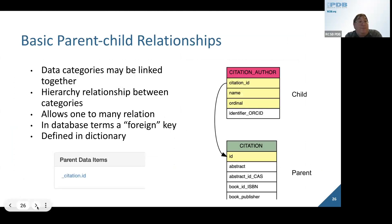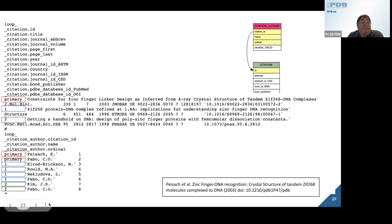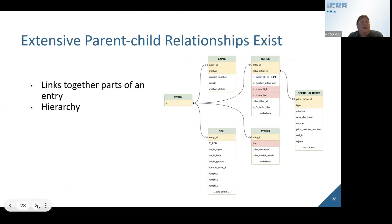I've just briefly mentioned the parent-child relationships. As I indicated earlier, you could have a citation with an ID which links back up to multiple authors. We link these things together, and there are more extensive hierarchies available within the dictionary relating the various categories together. Within the experimental category, we have an entry ID. We could have multiple chains linked together in a form of a hierarchy.